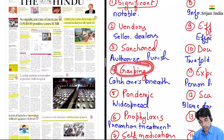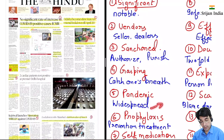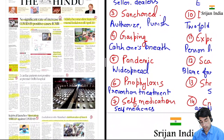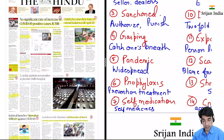Then 'gasping' matlab catch one's breath. Then 'pandemic' — pandemic ka matlab yeh widespread ho gaya hai, like disease. COVID-19 is a pandemic. Then 'prophylaxis' — jaise jo drug hai abhi malaria wali, that is prevention or treatment ke liye yeh medicine use ho rahi hai, then it is called prophylaxis.